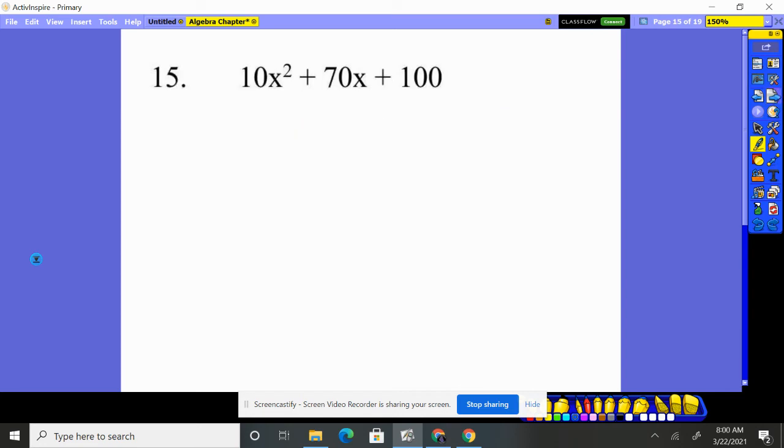Ooh, look at this. There's a number out in front of that X squared. Tells me I'm probably going to factor a 10 out, and yes, I will. I'll factor a 10 out. That leaves X squared. 10 times 7 gives me 70, and 10 times 10 gives me the 100. So I just factored 10 out, so 10 is a factor of that entire trinomial.